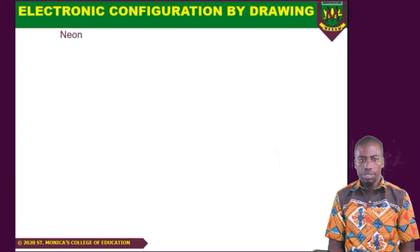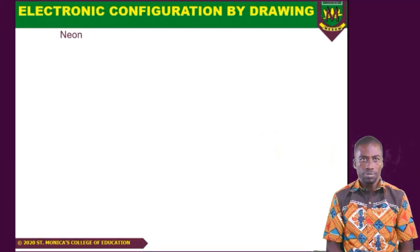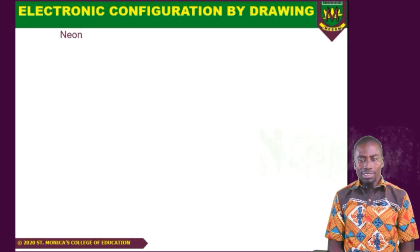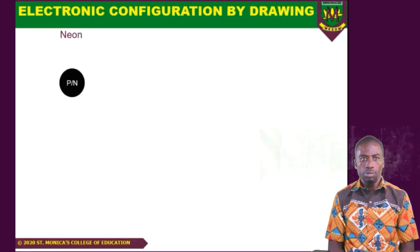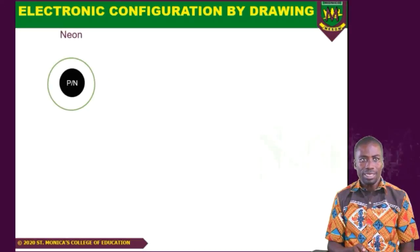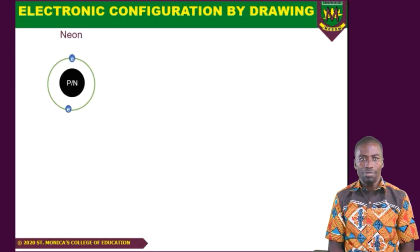Sometimes we can ask you to draw the electron configuration, or we ask you to write it. So let's see how we can draw the electron configuration of neon. Neon is number 10 on the periodic table. I have my nucleus, with protons and neutrons represented there. I have my first shell — the K shell — in green, which takes two electrons. Then neon has 10 total, so we have eight more electrons going to the L shell, which can take a maximum of eight. So I draw two, then another two, another two, and another two — totaling ten electrons.